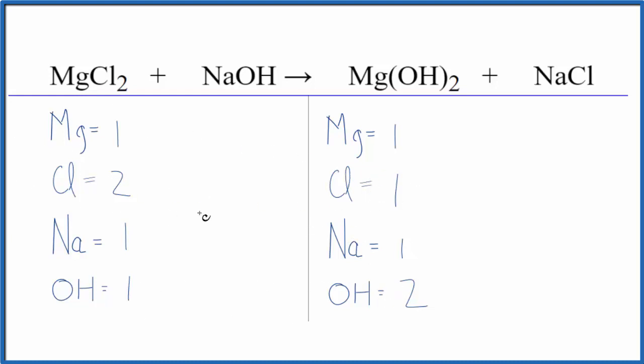So let's do the chlorines first. We put a two here. That gives us two times one. So we have two sodium atoms, but the two applies to everything. Two times the one chlorine. Now the chlorines are balanced.